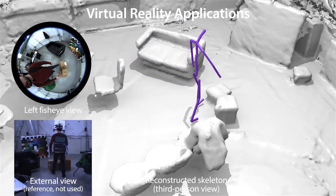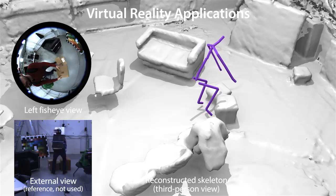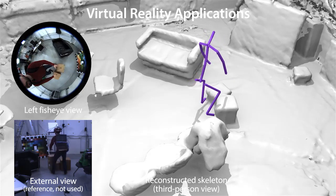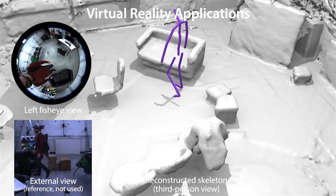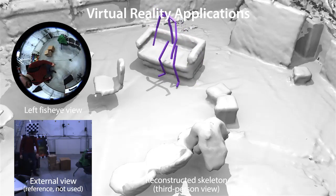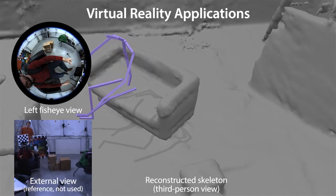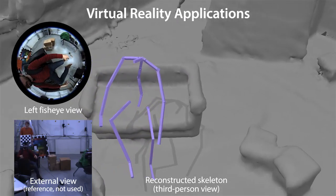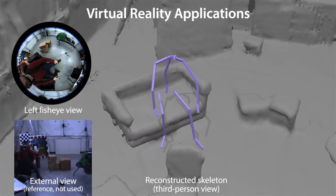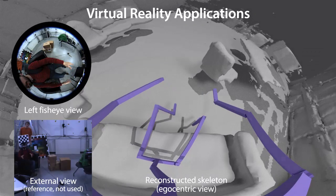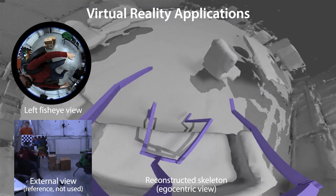This is a virtual reality scenario, in which the global pose of the user is tracked with structure from motion. Here we show the user's skeleton in a virtual environment, in which he interacts with a virtual object. Here the user sits down in a real sofa, and a virtual sofa in VR. This is how the user could perceive the virtual rendering through a VR headset.